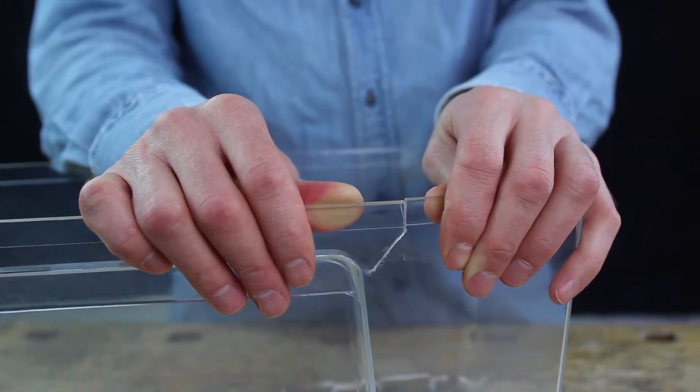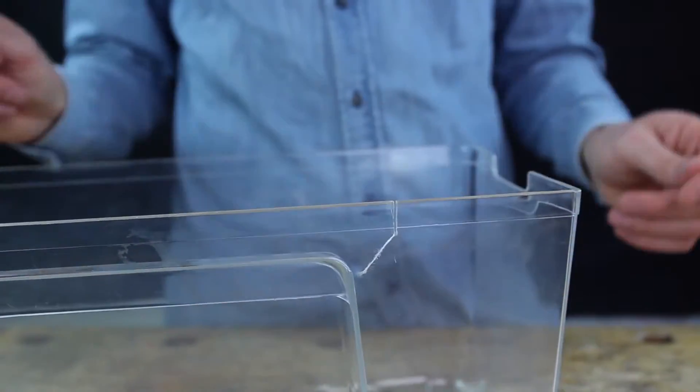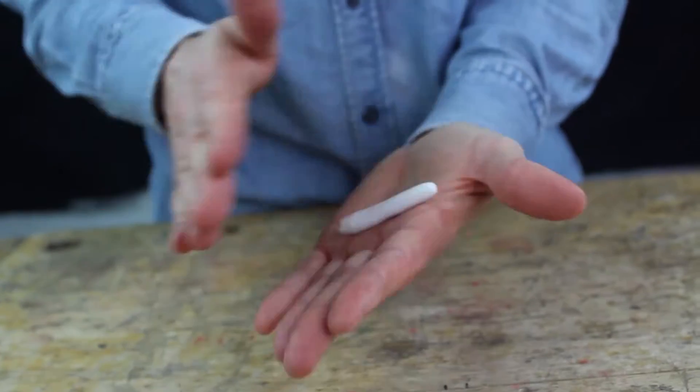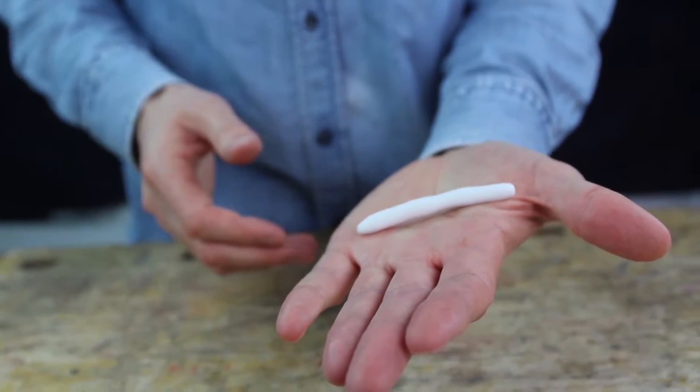If you want to apply Sugru over a larger surface area, like a crack in plastic, then start by rolling Sugru into a sausage. Make the sausage as long as the area you wish to cover.